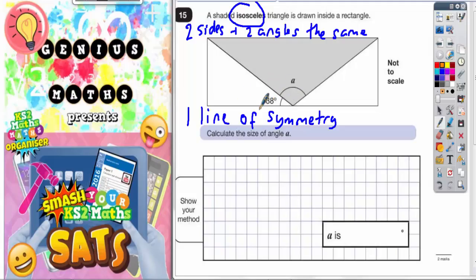There's a few ways you could think about this. The first way is that if this is an isosceles triangle, then this would be a line of symmetry through the triangle. If this is a line of symmetry, then if this angle here is 38, the angle on the other side is also 38. What you've got here is angles on a straight line. There's your straight line. Remember, angles on a straight line add up to 180.